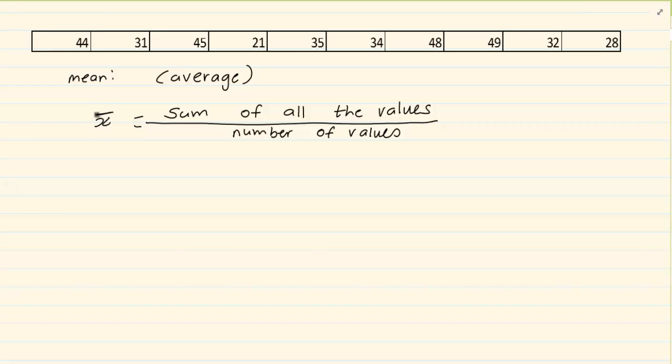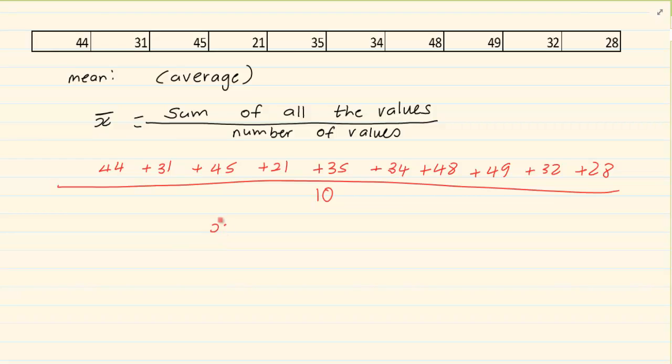And the sign for average is x̄ with a stroke on top. Now it's good to know the sign because as you come to the bigger grades, you're going to use your calculator quite often. And then when they ask you what is the mean, you immediately know the sign is what you're looking for. So if I was doing the average or the mean for the following data that's given, what would I be doing? I'd be saying 44 + 31 + 45 + 21 + 35 + 34 + 48 + 49 + 32 + 28 divided by how many values are there? 1, 2, 3, 4, 5, 6, 7, 8, 9, 10. So you're going to divide it by 10. Now if you press this into your calculator, you're going to get 36.7.